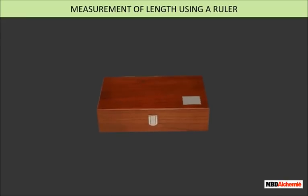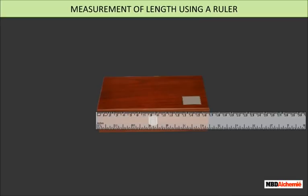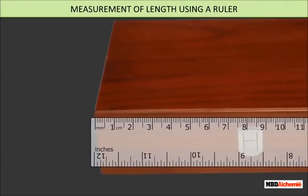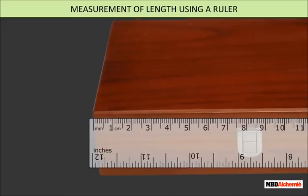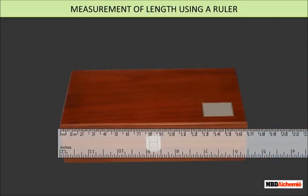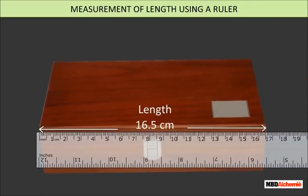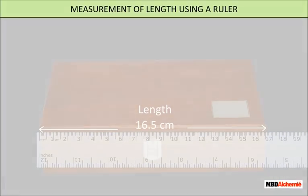When measuring the length of an object with a ruler, the following points should be remembered: the ruler should be placed along the length of the object to be measured; the ruler's zero mark should be placed at one end of the object; and the mark corresponding to the other end of the object gives the length of the object.